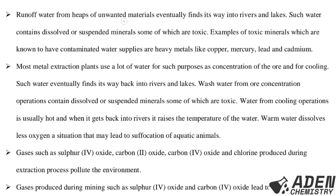Run-off water from heaps of unwanted materials eventually finds its way into rivers and lakes. Such water contains dissolved or suspended minerals, some of which are toxic. Examples of toxic materials known to have contaminated water supplies are heavy metals such as copper, mercury, lead, and cadmium. Most metal extraction plants also use a lot of water for purposes such as concentration of the ore and for cooling.